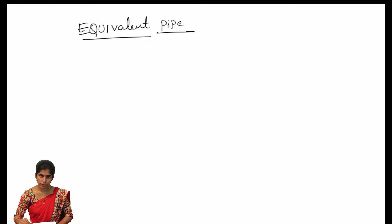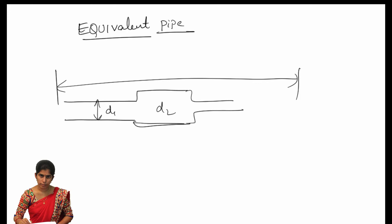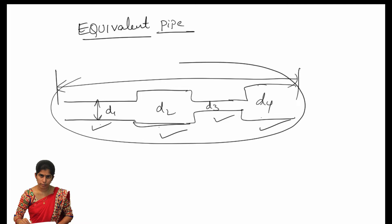Generally when we are laying pipes, suppose if we have to lay a pipe from one section to another, we use a first pipe of diameter D1, next it may become D2, then D3, then D4. These are different pipes having different diameters. If we want to change all these four pipes into a single pipe, that is called the equivalent pipe.